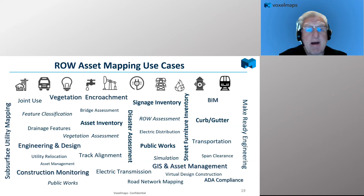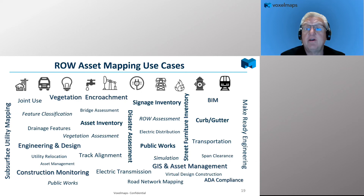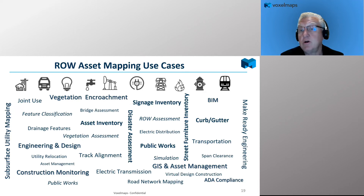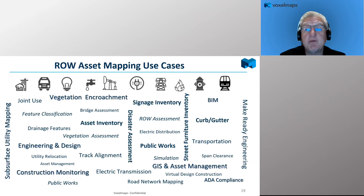Now let's talk about right-of-way asset mapping use cases. When somebody talks about right-of-way, it's not just transportation — there's a lot of assets that sit within a right-of-way. It's utilities, public works, water and sewerage. You might want to do bridge assessment, identify drainage features, culverts, signage inventory, curb and gutter, or find places that need ADA compliance. I look at the right-of-way essentially as an ecosystem with potential use cases across a wide variety of different markets.